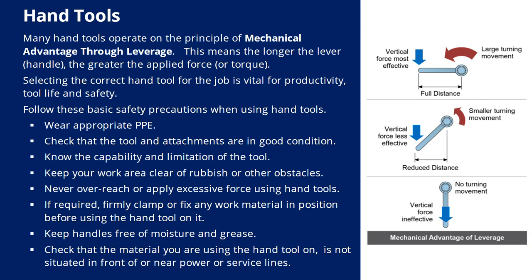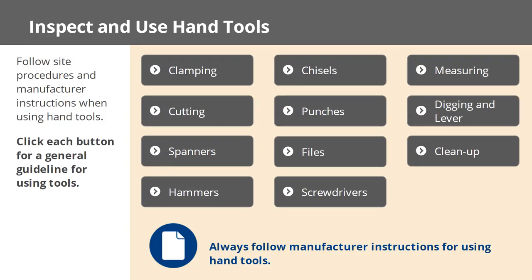Wear appropriate PPE. Check that the tool and attachments are in good condition. Know the capability and limitation of the tool. Keep your work area clear of rubbish or other obstacles. Never overreach or apply excessive force using hand tools. If required, firmly clamp or fix any work material in position before using the hand tool on it. Keep handles free of moisture and grease. Check that the material you are using the hand tool on is not situated in front of or near power or service lines.